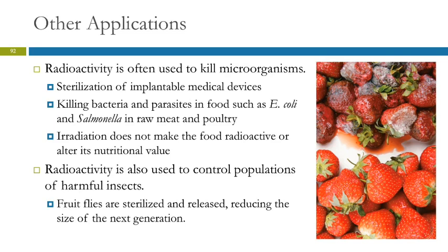We can also use radiation to kill bacteria and parasites in food — including E. coli and salmonella in raw meat and poultry. People tend to resist food irradiation, but the radiation doesn't affect the food. It doesn't change the composition of the food, it doesn't make the food radioactive — it just kills the harmful organisms.